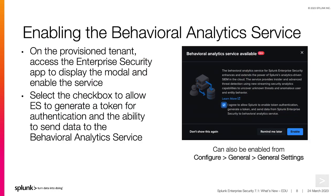Enabling the behavioral analytics service is simple. On the cloud-based tenant, access the Enterprise Security app. If eligible, the window to enable the service will appear. Select the checkbox to allow ES to generate a token for authentication and the ability to send data to the behavioral analytics service, then click Enable. If you do not enable the service here, you can always enable it from the ES General Settings menu.